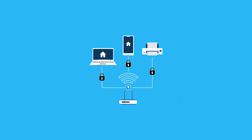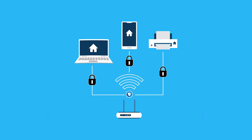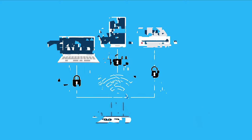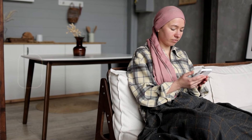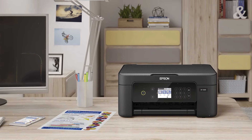So what is a home network? A home network is a localized system that connects various devices within a household, allowing them to communicate with each other and share resources. This includes sharing internet connections, files, printers, and other devices like smart TVs and gaming consoles.